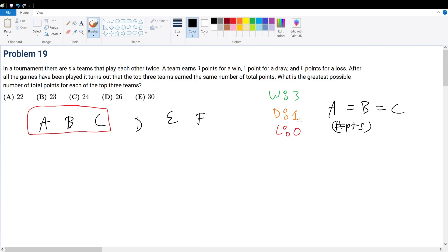So with this understanding, what is the greatest possible number of total points for each of the top 3 teams? We want to maximize this total number of points. So how do we do that? Well, first of all, there are two special cases to consider. The first case is where they play amongst each other, A, B, and C.